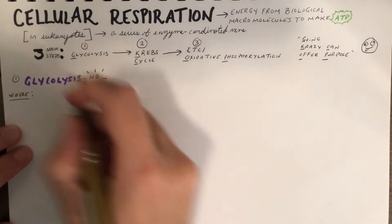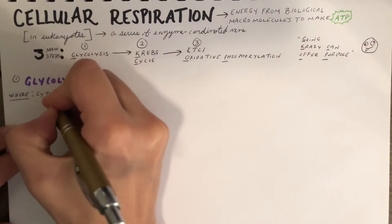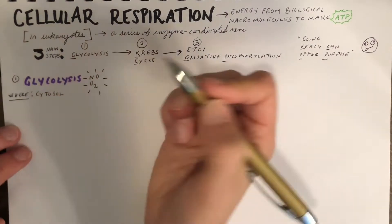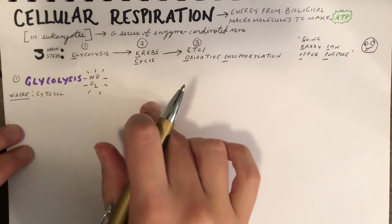So, it's important to remember that glycolysis occurs in the cytosol of a cell, not in the mitochondria. But it's still our first step in cellular respiration.